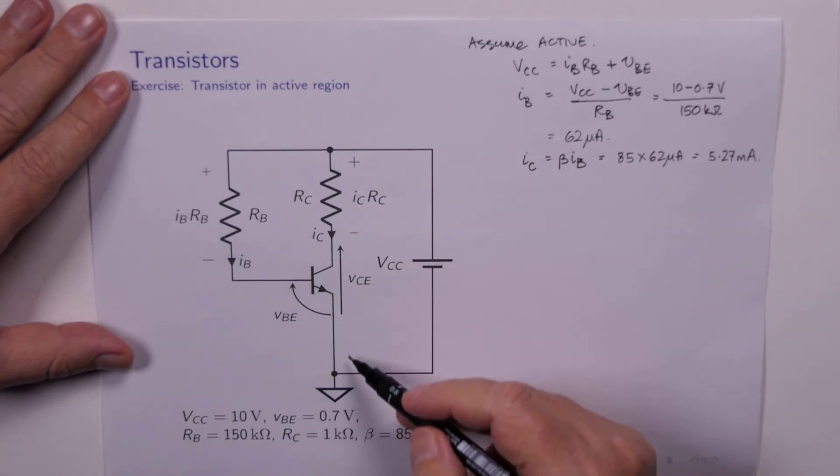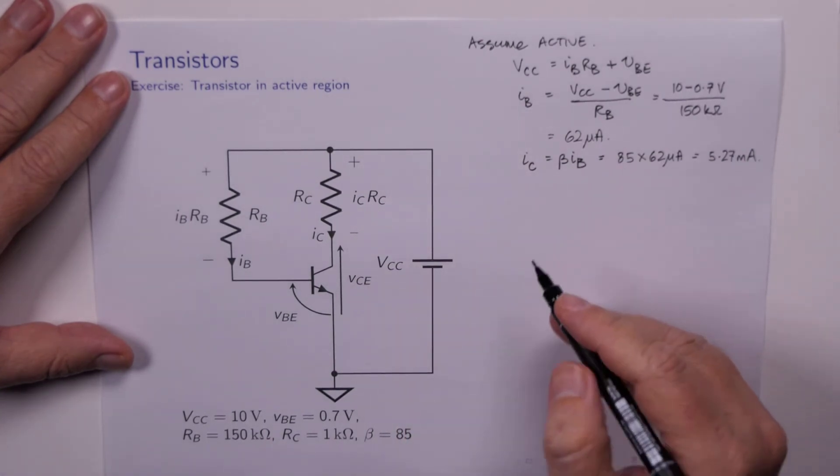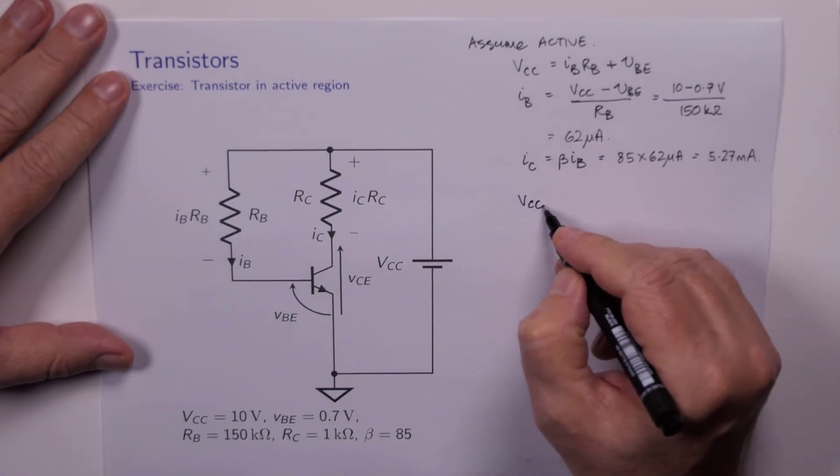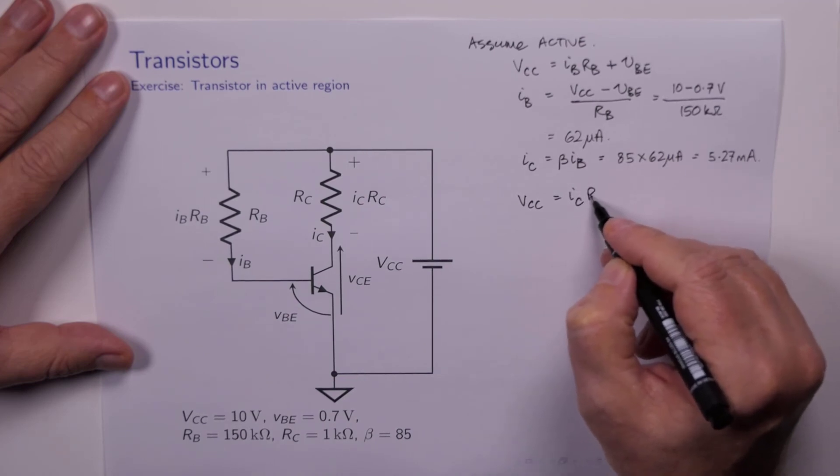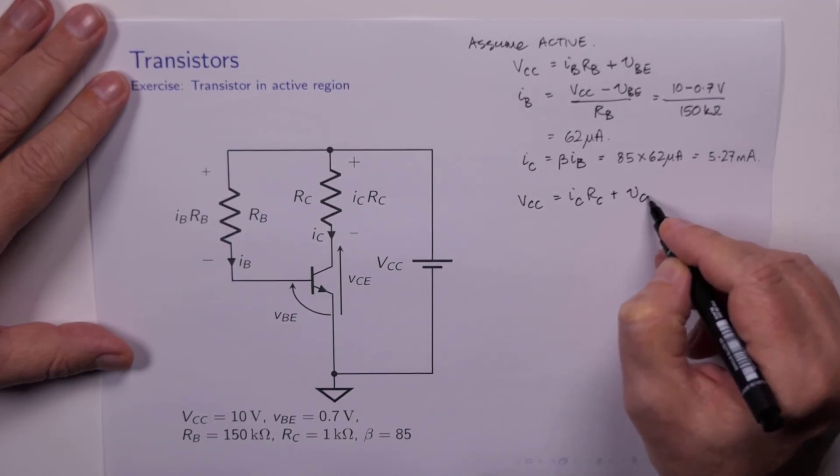And that is equal to 5.27 milliamps. Now we can turn our attention to the output loop.